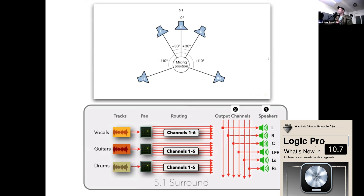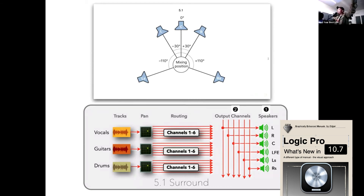This is easy to understand. In stereo we have two channels and position left and right. In surround you can move something to one speaker, spread it across two, three, four, or all five speakers. Understand that concept, because it's about to get a little more interesting.